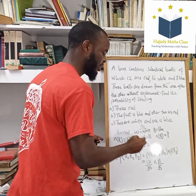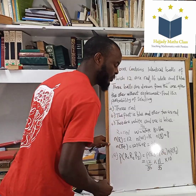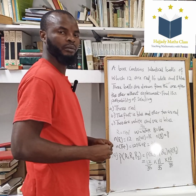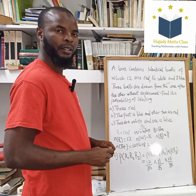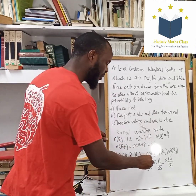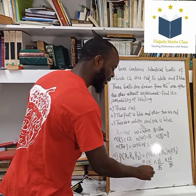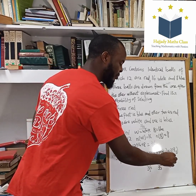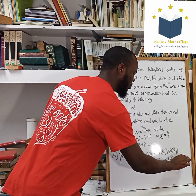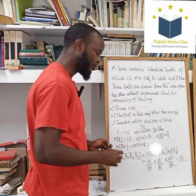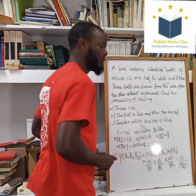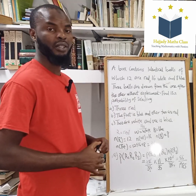So for the third attempt, the red balls decrease by 1 again, which is 10, and the same thing happens to the total, decreasing by 1 to 34. If you multiply the numerators over the denominators and simplify, this is going to give you 55 over 1,785, which is your answer for the first question.